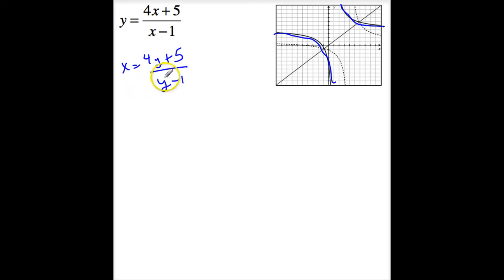Now, the next thing you want to do is solve this for y. So x times (y minus 1) is equal to 4y plus 5. So xy minus x is 4y plus 5. Collect my y terms.